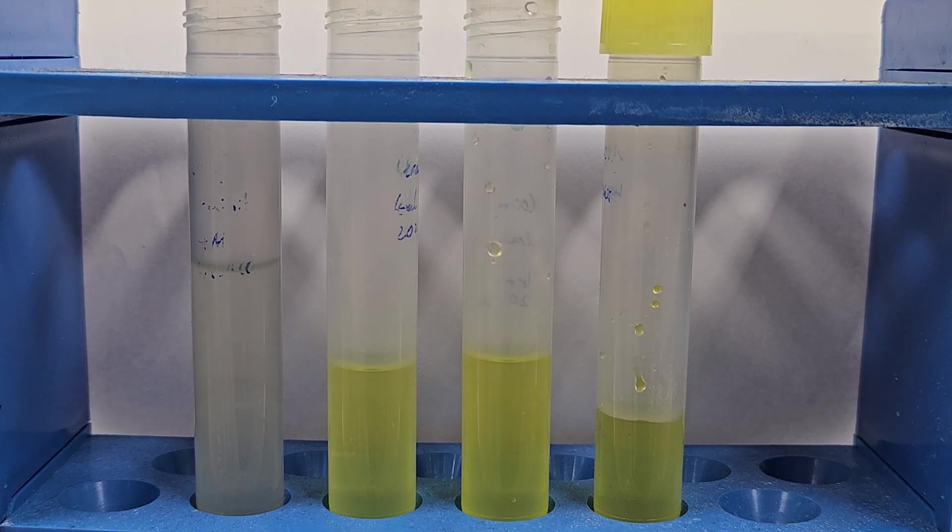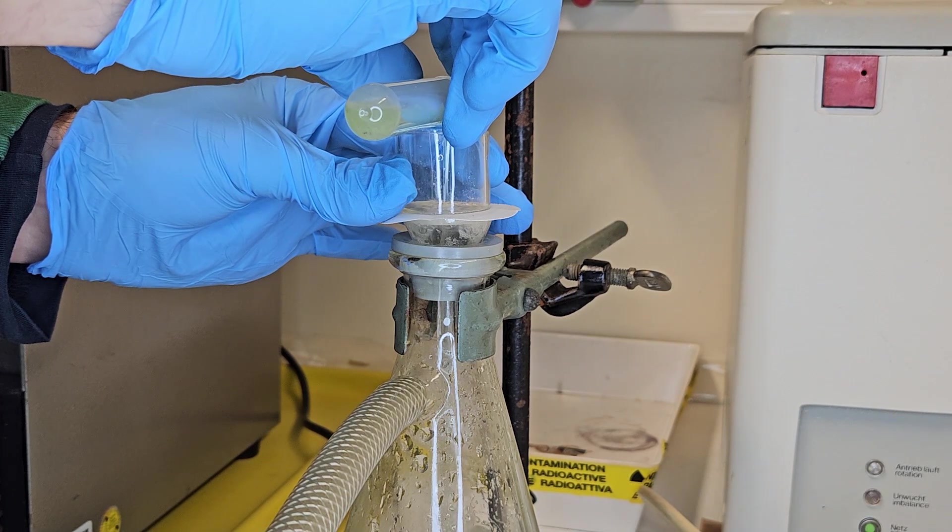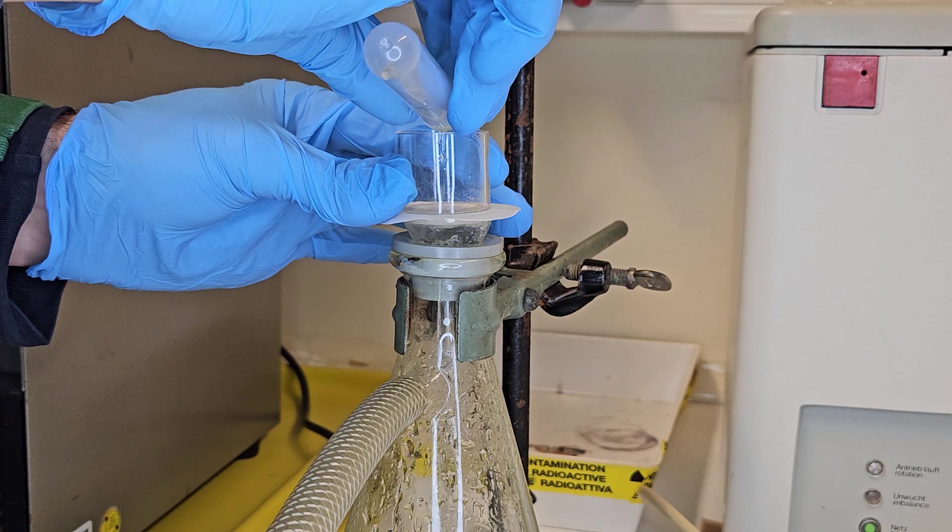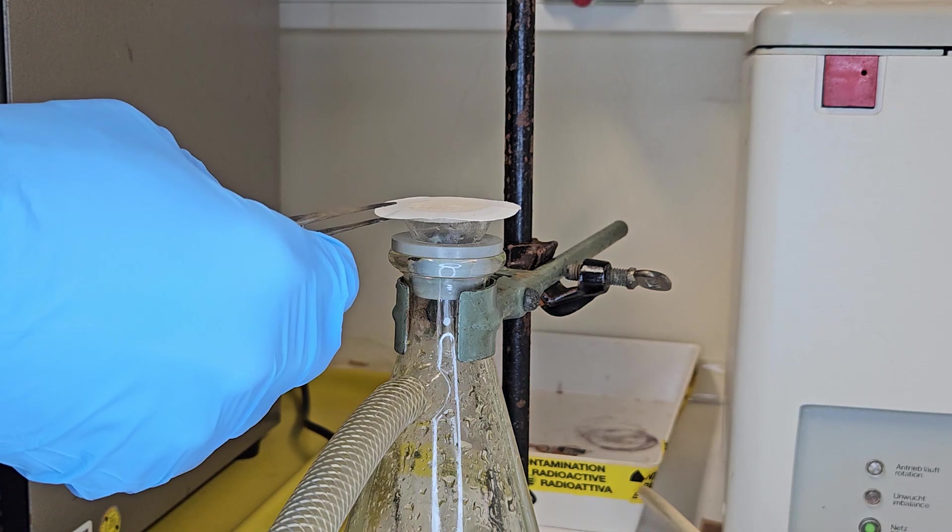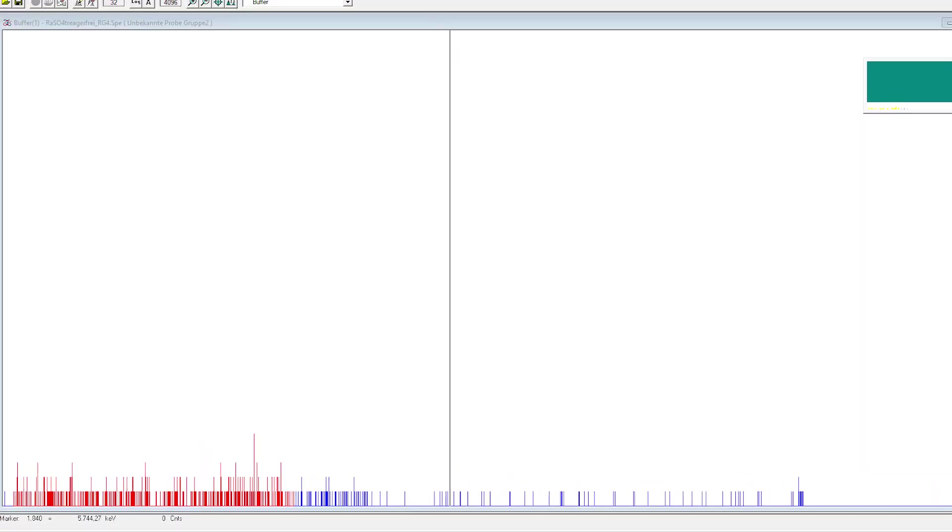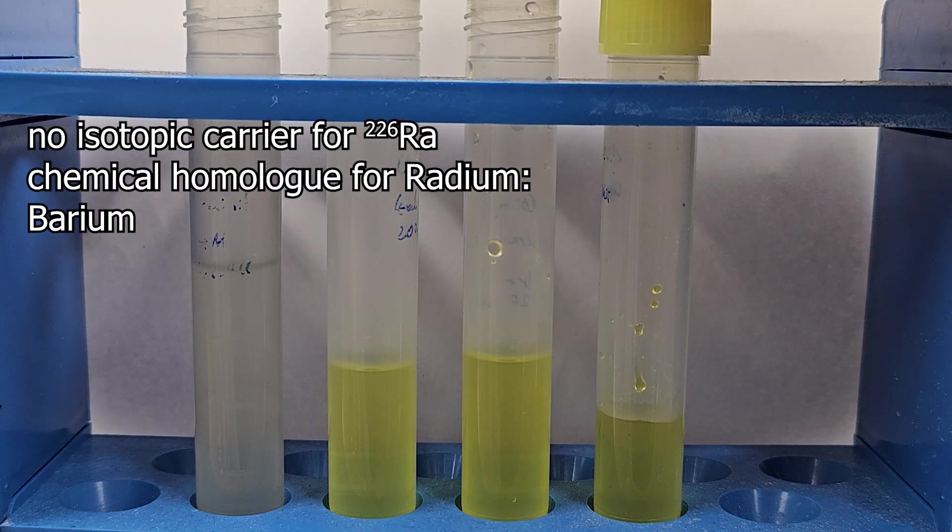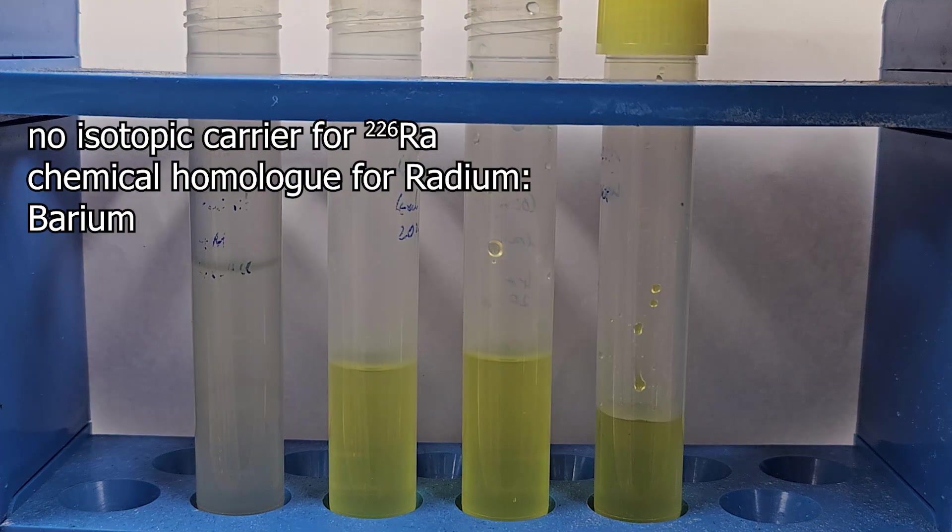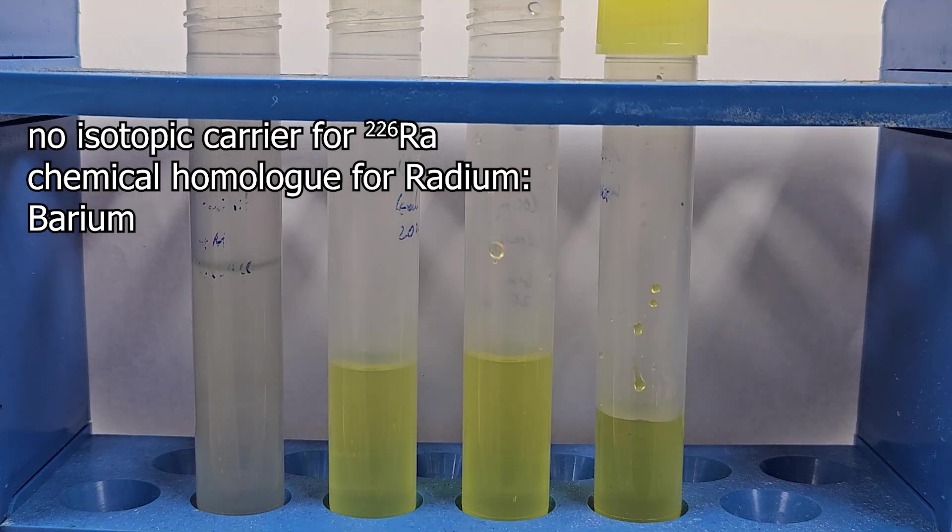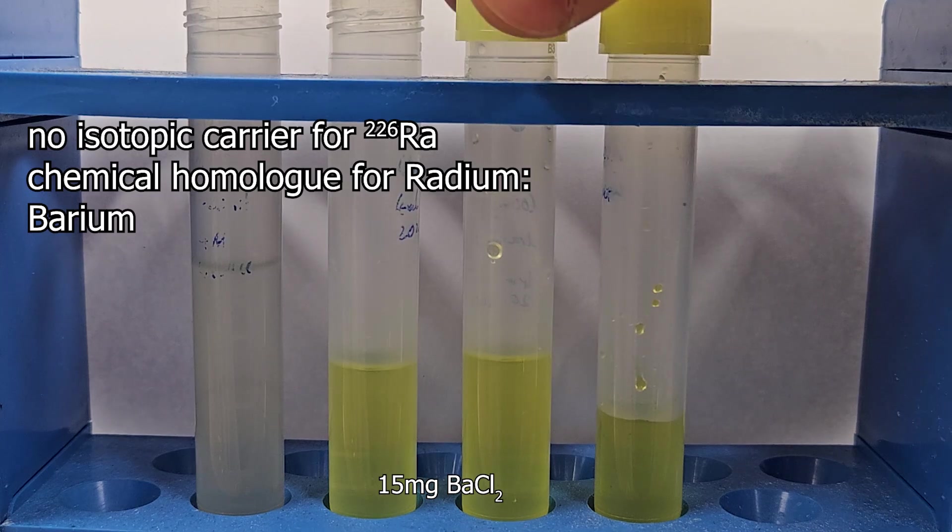Often you want to precipitate the nuclide out of the solution later in the form of some precipitate. Like here with radium as a polysoluble sulfate by adding sulfuric acid. Unfortunately, that didn't work. Because with an activity of 1 kilobecquerel, the solubility product of radium sulfate has not been exceeded. Because there is no suitable carrier of the same element for radium-226, a chemical homolog must be used. Barium chloride was added here.